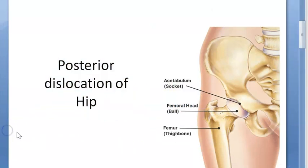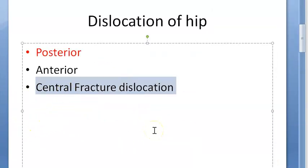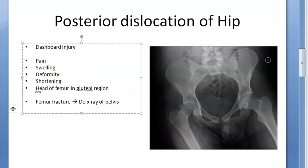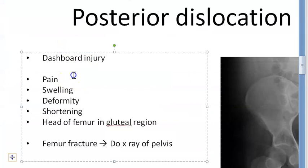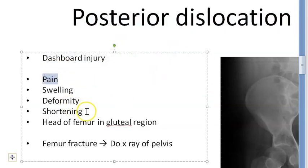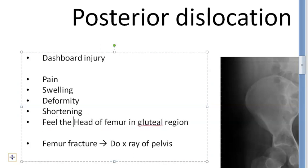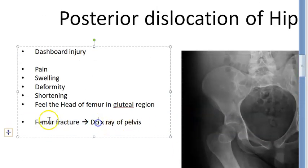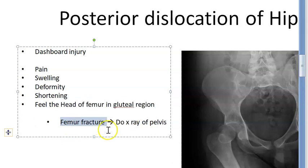In this video, we looked at posterior dislocation of the hip, which is more common than anterior and central dislocation. Also called dashboard injury, it occurs when a road traffic accident causes the knee to hit the dashboard and the impact is transmitted via the shaft of femur to the hip joint. The patient will have pain, swelling, deformity, shortening of the leg, and the femoral head palpable in the gluteal region.